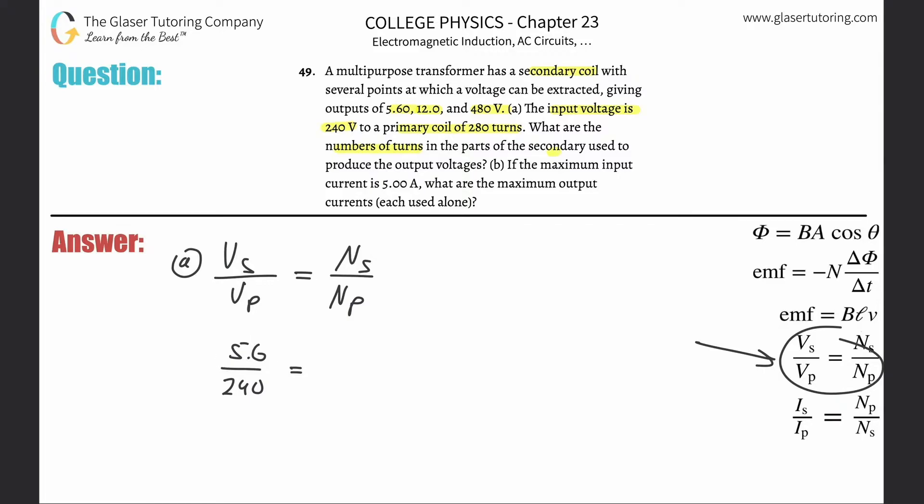We'll start with the 5.6 output voltage. And then that's going to be equal to the number of turns in the secondary coil. So here we have, that's what we're being asked for. It says, what are the number of turns in the secondary? Okay. So we're going to leave that alone. And then the primary, they told us that there's going to be 280 turns.